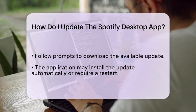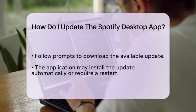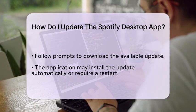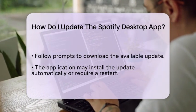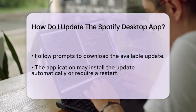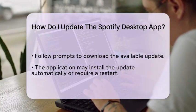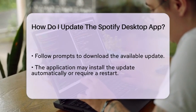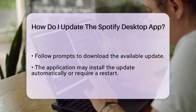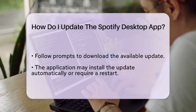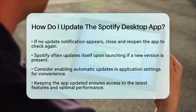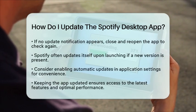In some cases, if you do not see an update notification, you can also manually check for updates. To do this, simply close the application and reopen it. Spotify often updates itself upon launching if a new version is available.